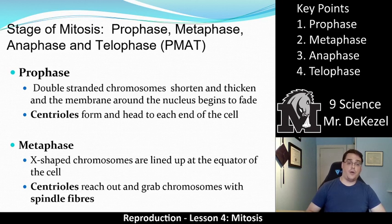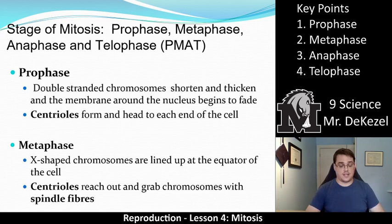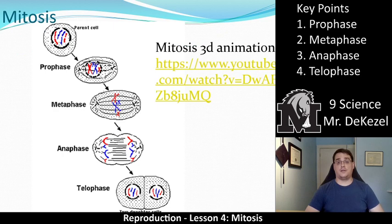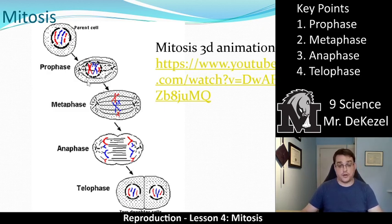They were previously just long strings that we refer to as DNA, and then they condense into chromosomes. Prophase also orients the cell to have two different poles — centrioles form and head to each end of the cell, spreading out to opposite sides. Looking at the diagram, prophase is the second diagram. You can see the X's forming, the centrioles on the left and right starting to stretch out the cell, and the nucleus starting to break up.